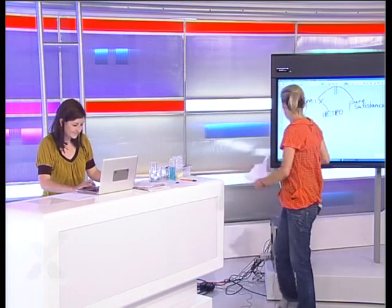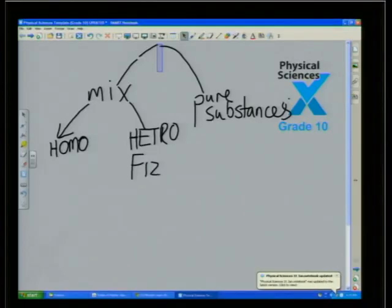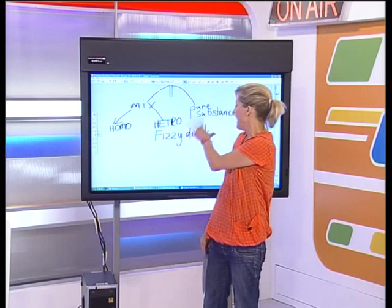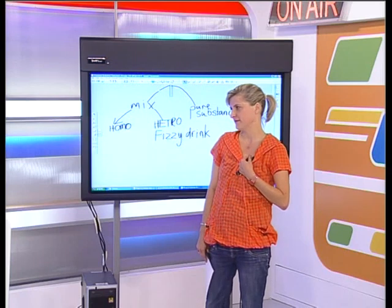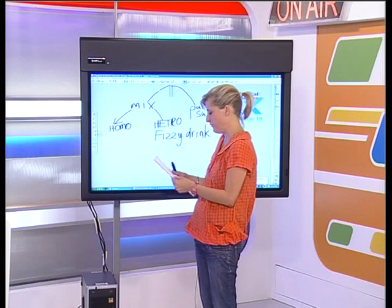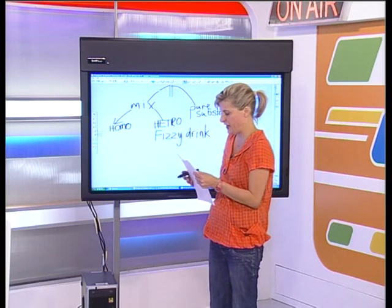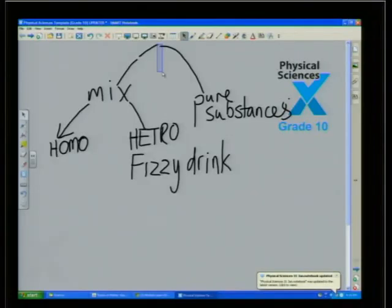Let's think of another example: what about a fizzy drink? I'm specifically referring to phases — solid, liquid, and gas. Two or more of those phases are involved in a fizzy drink. Let's ask the audience! While we wait, another example of a homogeneous mixture is our copper chloride in water.